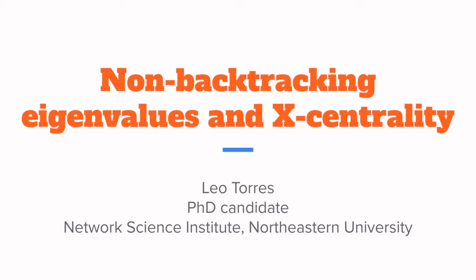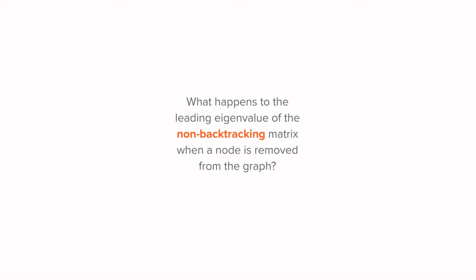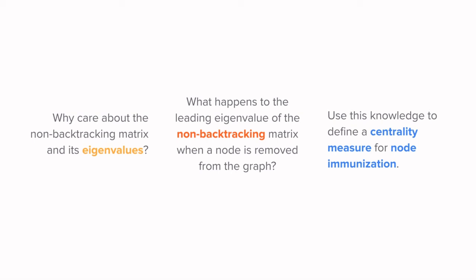Today I'm going to show you two things. First, what happens to the leading eigenvalue of the non-backtracking matrix when a node is removed from the graph? And second, how to use this knowledge to define a notion of node centrality and use it for the application of node immunization. But before all that, let me convince you that you should at all care about this matrix and its eigenvalue.